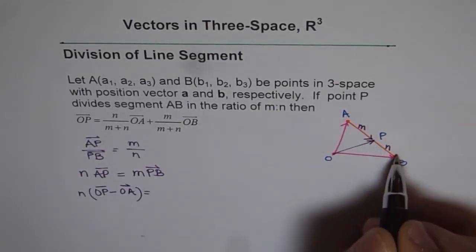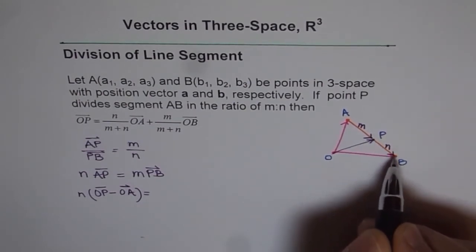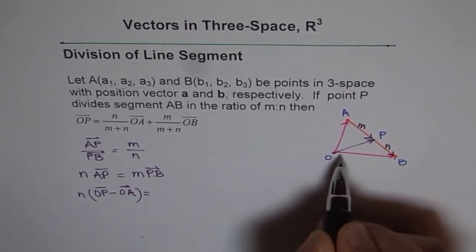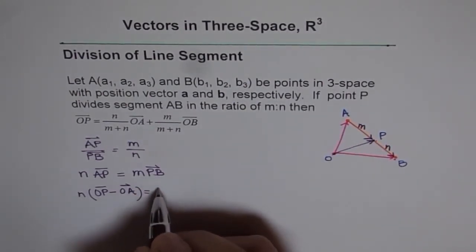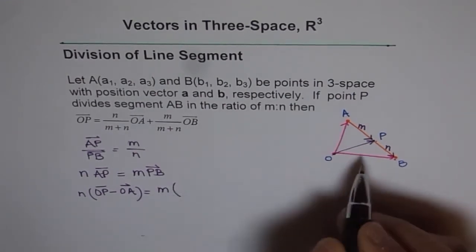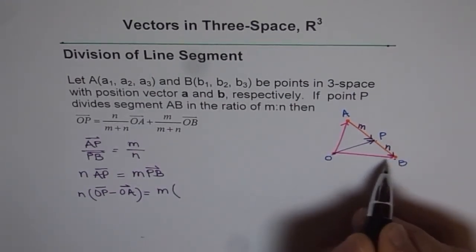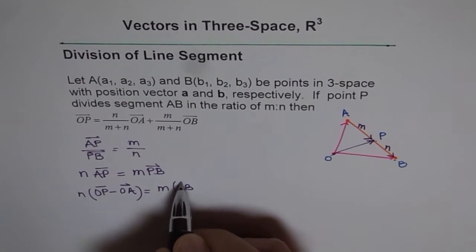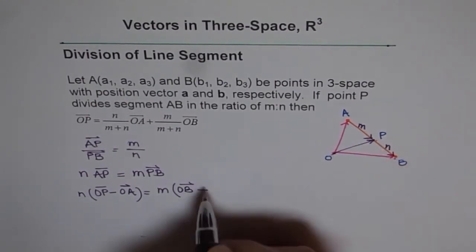Similarly, what is PB? Now PB is OB minus OP. So I can write PB as M times, PB is OB minus OP.